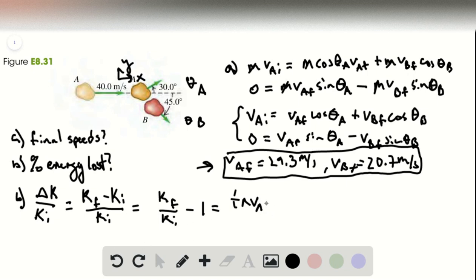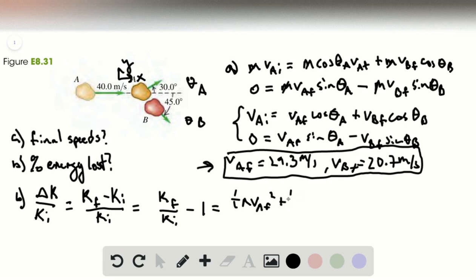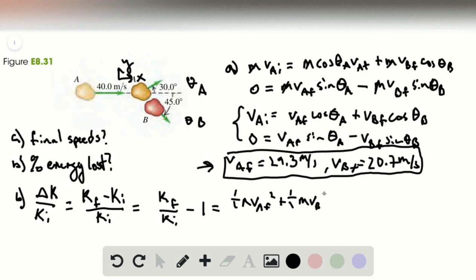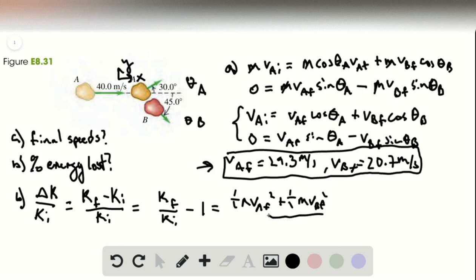Excuse me. One half M VA final squared plus one half M VB final squared divided by K initial. And then all of the one half M's are going to cancel out, which makes our lives a little bit easier.